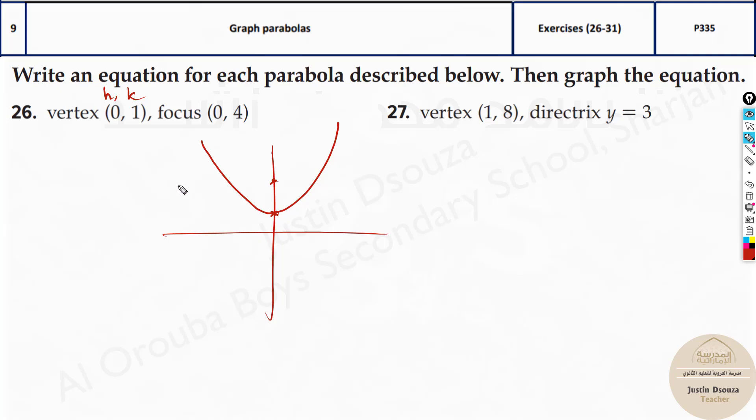But what if there are two options which will be something like this? Which one is the correct answer? It's very hard to deduce, right? We need to know the a value. How would we find the a value? It's from the focus.